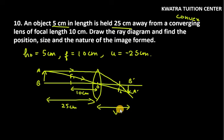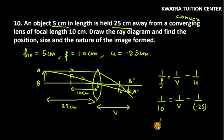Now, let us know how much distance your image is. F and U are known, we can easily find V. The formula is 1 over F equals 1 over V minus 1 over U. 1 over F, so F is 10. V is unknown, and U is minus 25. So 1 over 10 equals 1 over V plus 1 over 25.